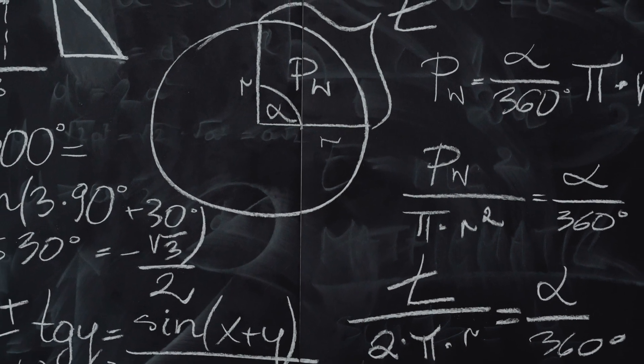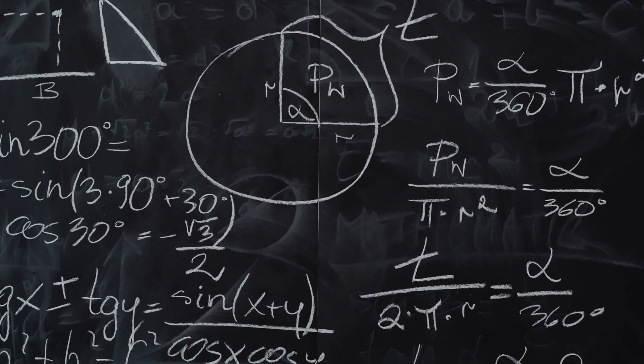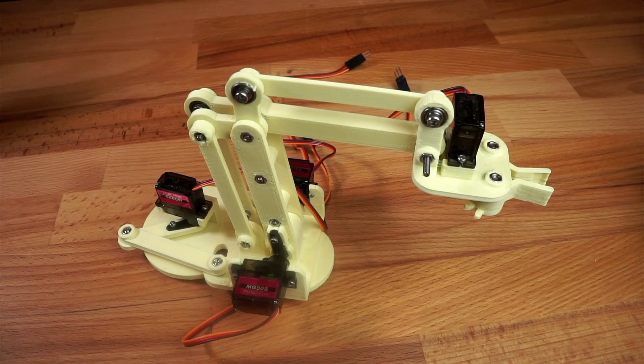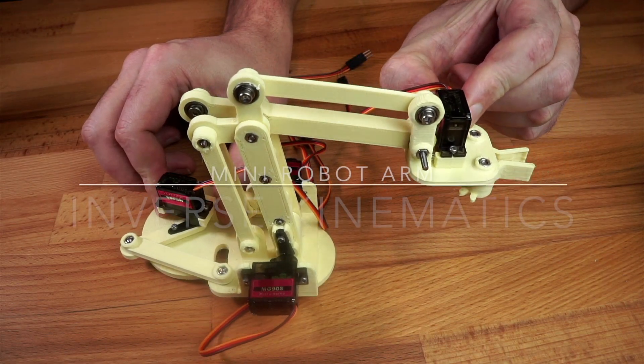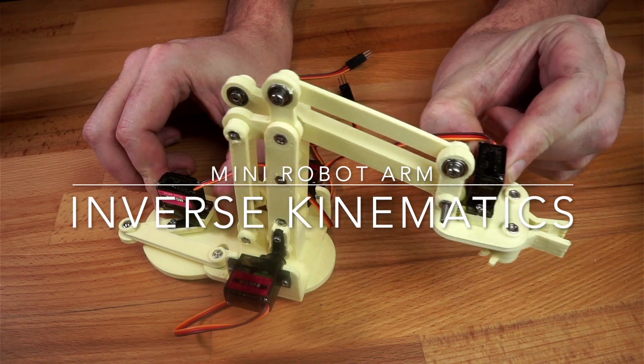It's easy to assume that just because inverse kinematics uses maths it's difficult. It's really not. In this video I'm going to show you how to use five simple lines of maths to calculate the inverse kinematics for this little robot arm.